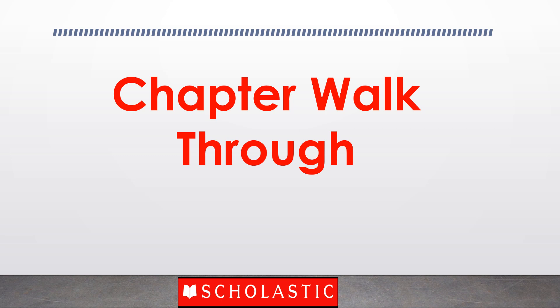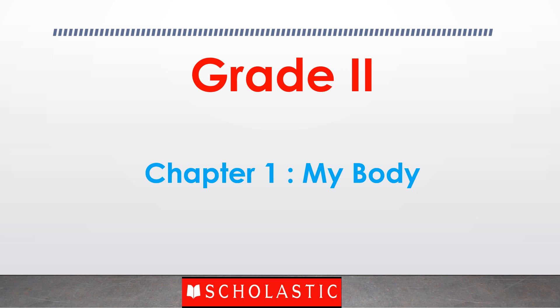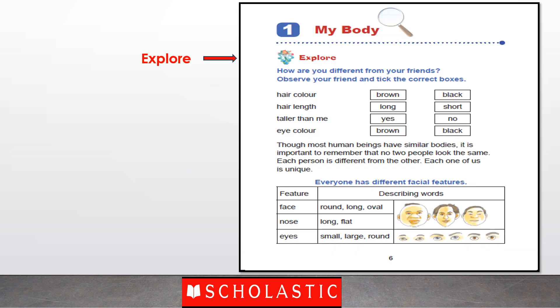Let's do a chapter walkthrough for better understanding of these features. I request you to open your grade 2 book. I will take you through chapter number 1, My Body. This chapter is about making children understand the similarities and differences in physical features of the human body and a detailed study of internal organs. To initiate the chapter and to link the children with their previous knowledge, we need to do the before you begin activity from teacher manual page number 3, which is related to the revision of external organs that students have learnt in grade 1.